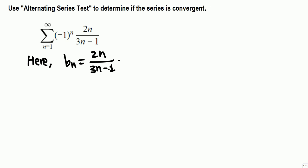Looking at this fraction 2n over 3n minus 1, when n goes to infinity it's not gonna go to 0, it's gonna go to 2/3. So it's clear b_n's are not decreasing to 0. b_n's might decrease, but they do not decrease to 0.